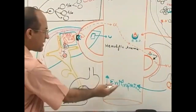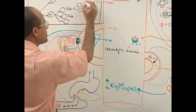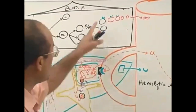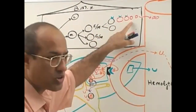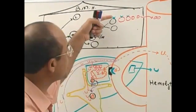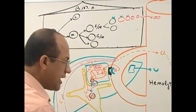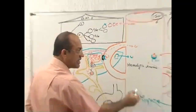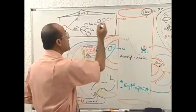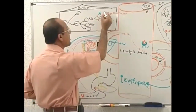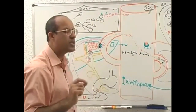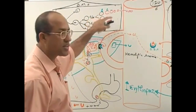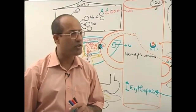Erythropoietin has its receptors on proerythroblasts and erythroblasts in the bone marrow — the precursor cells of red blood cells. This erythropoietin is carried by the blood to the bone marrow, where it binds with those receptors. When erythropoietin binds with the receptors on proerythroblasts and erythroblasts, what is its function?